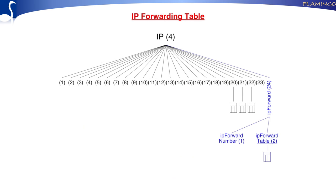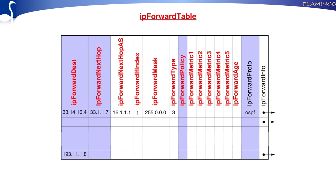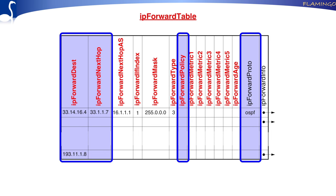The forwarding table was added later because the routing table could only have one metric for a specific destination. The forwarding table solves that — it has many indexed columns: destination, next hop, policy, and protocol. This combination provides enough uniqueness to support multiple routes to the same destination.